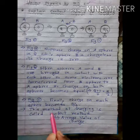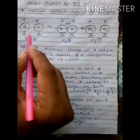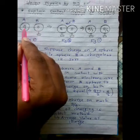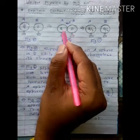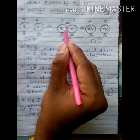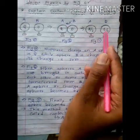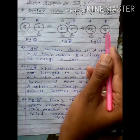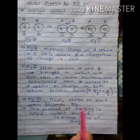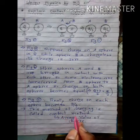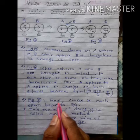This method of charging is called the contact method. In Figure A, charge on sphere A is Q and charge on sphere B is 0. In Figure B, both spheres are in contact, electrons are transferred from B to A. In Figure C, the charge on each sphere is Q/2. In the contact method, we always use the average value of charge for the final condition.